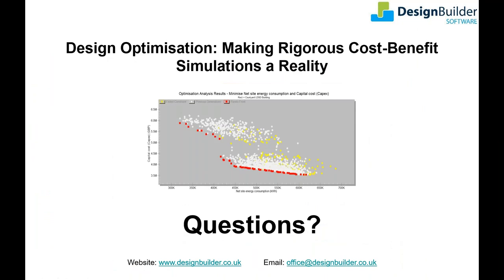That's the end of the formal presentation content and we'll now move into the questions phase. To finish, optimization's use of genetic algorithms makes it possible for you to assess the full range of design options in a commercially viable timeframe for normal projects. That in turn helps you ensure that your designs are optimal, gives the design team full confidence that your recommendations are truly optimal, and makes your client very happy that you've done everything realistically possible to optimize their building.